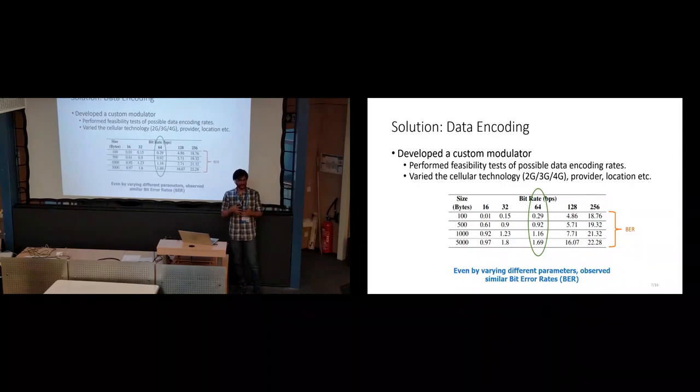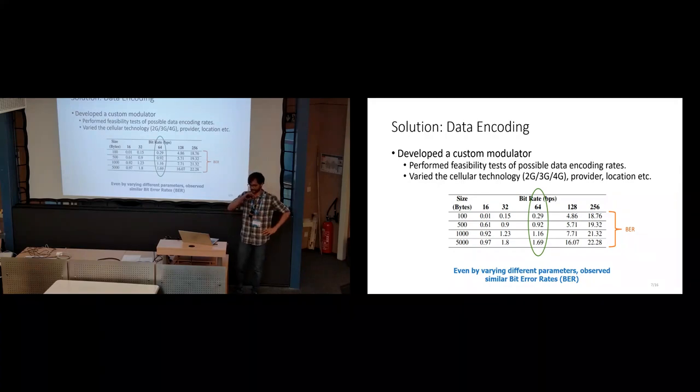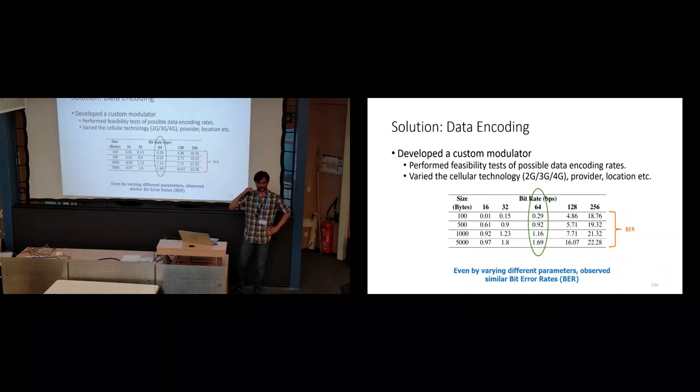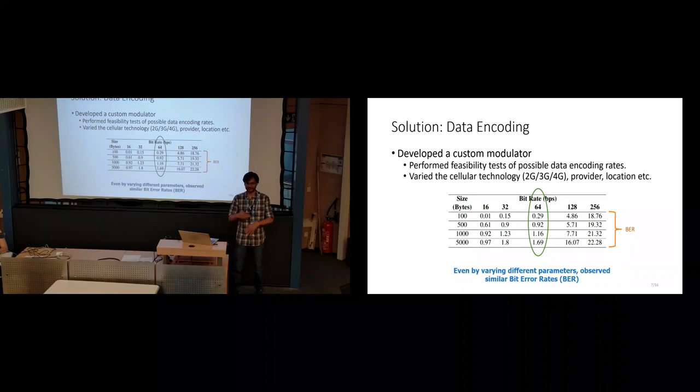I'll now go into how we address these challenges. For the first challenge where we need to send our bits into the channel, we needed to devise a modulator to encode data bits to audio. There were various techniques available, but we went ahead with frequency shift keying. Even with that, the amount of data rate we could get was not very high when we tested on real cellular networks. As you can see, for varying size of content transferred and varying bit rate, we tried to find a sweet spot at 64 bits per second where the error rate is close to 1%. But we cannot go as high as 256 bits per second where the error rate is 20%.